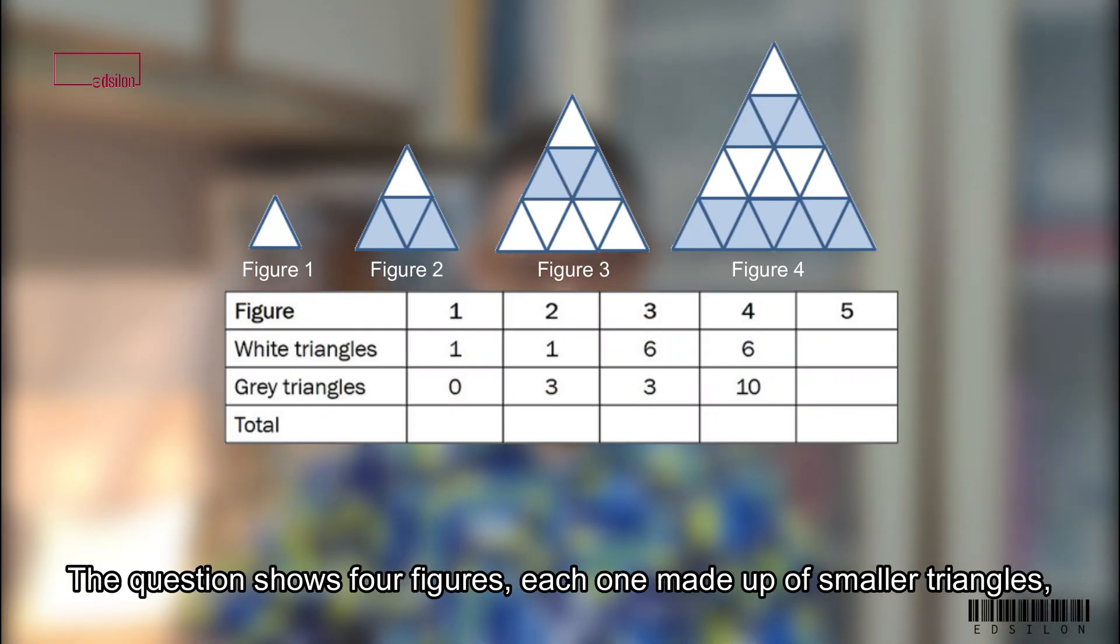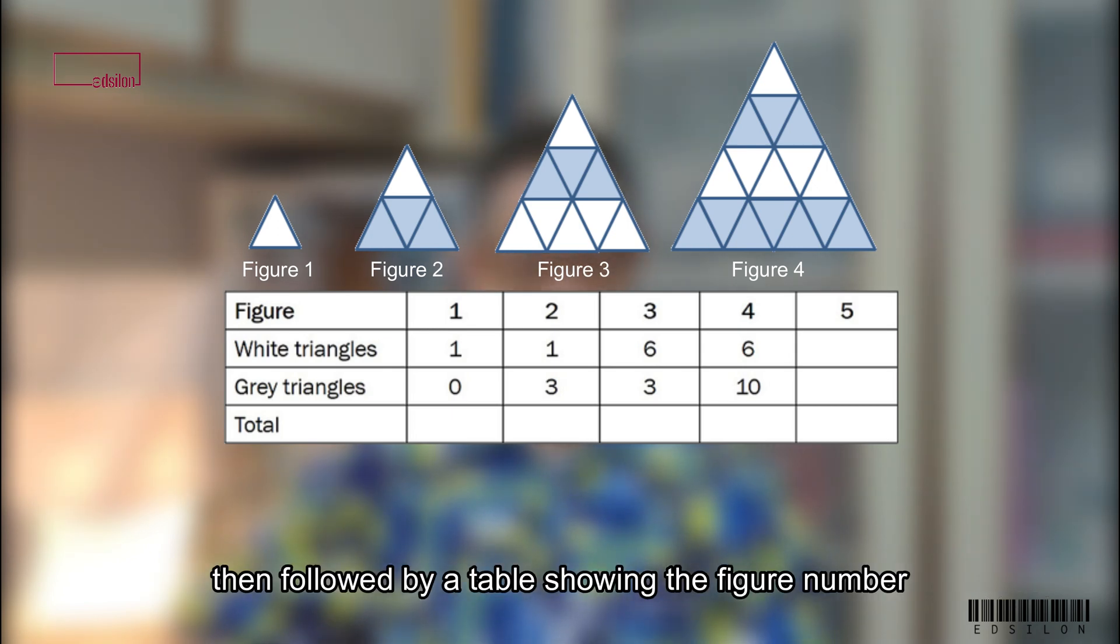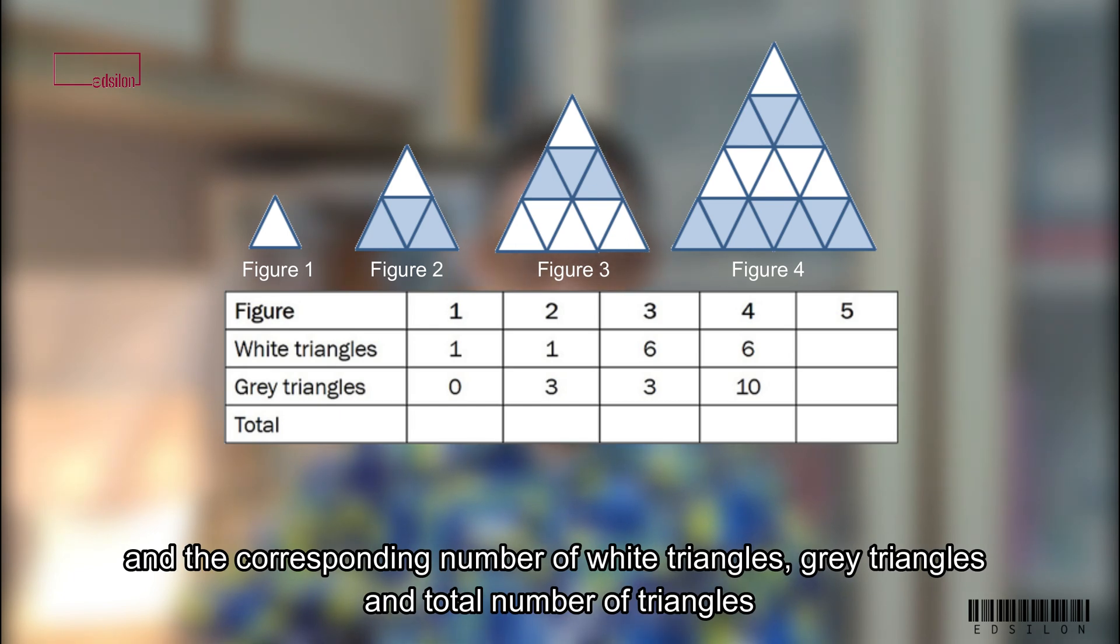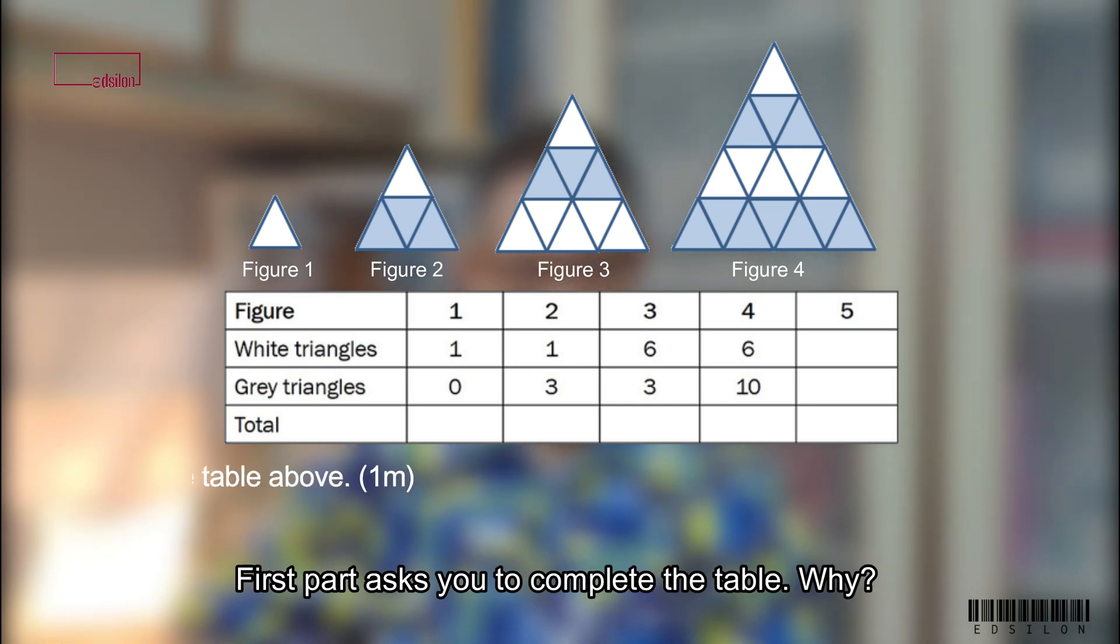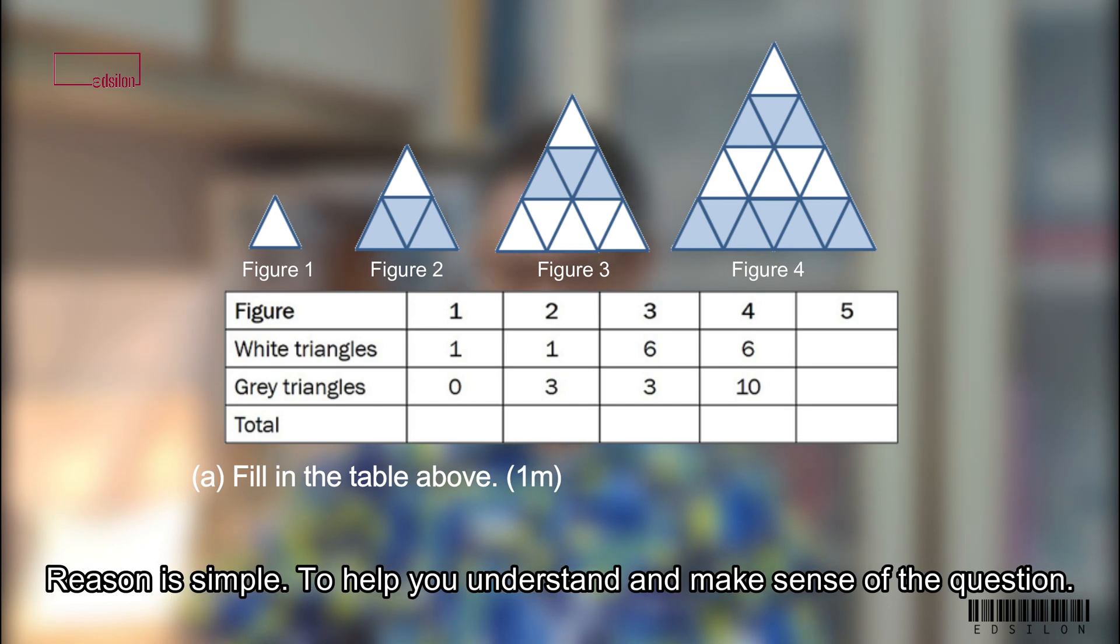The question shows four figures, each one made up of smaller triangles, then followed by a table showing the figure number and the corresponding number of white triangles, grey triangles and the total number of triangles. First part asks you to complete the table. Reason is simple. To help you understand and make sense of the question.